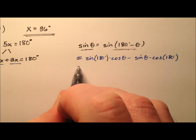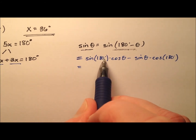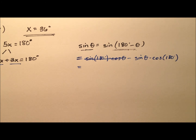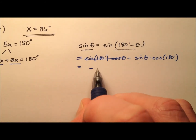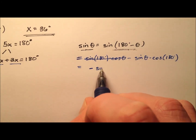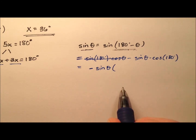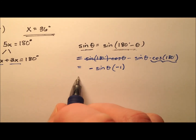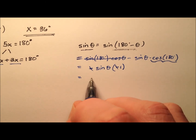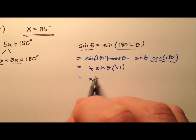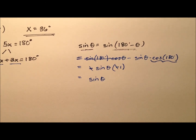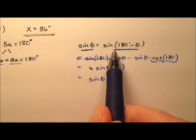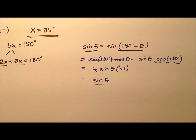As I continue through, the sine of 180 is actually 0, so that zeros out the first part of the expression. I just have negative sine theta times the cosine of 180, which is negative 1. The negatives cancel and I'm left with just the sine of theta. So we can see that the sine of an angle and the sine of its supplement are equal.